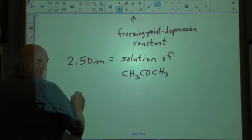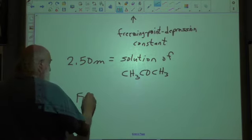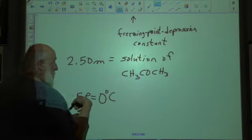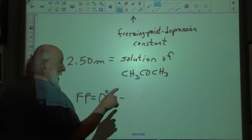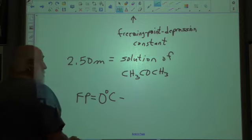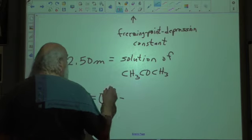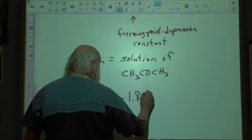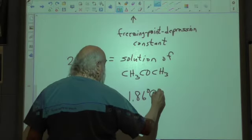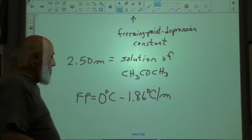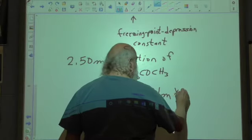So we got Fp is equal to zero degrees Celsius, the original freezing point of water. That you do have to know, and please say you know that already. Okay, times, now the freezing point depression constant, again, you do not have to remember this, but it's 1.86 degrees Celsius per mole per kilogram. That will be given to you on the test as well. Times 2.50.